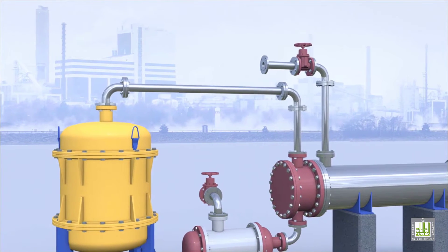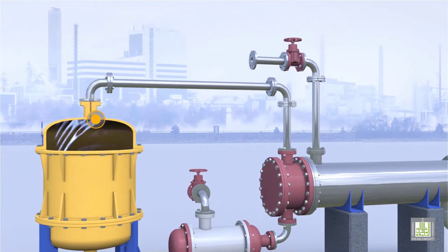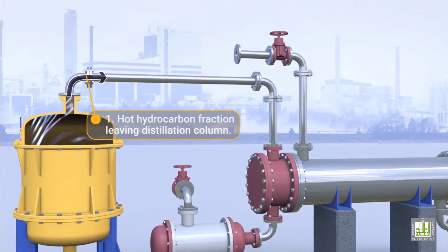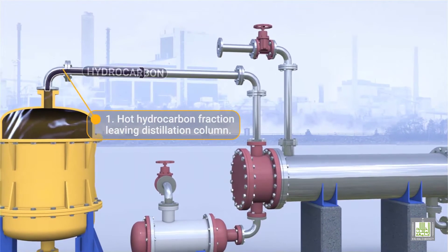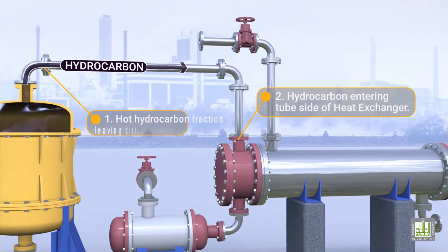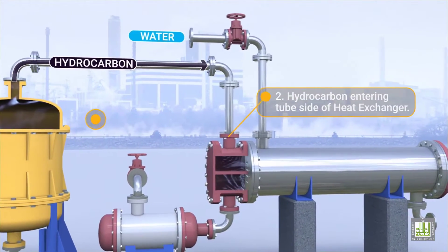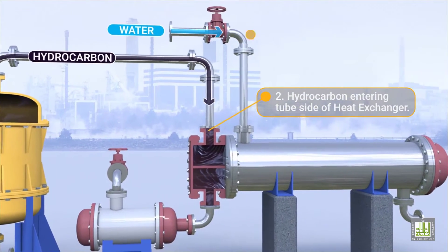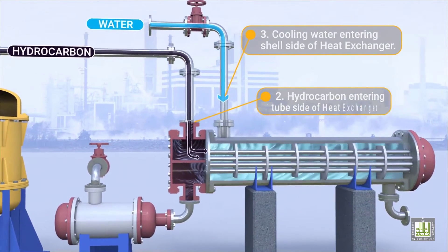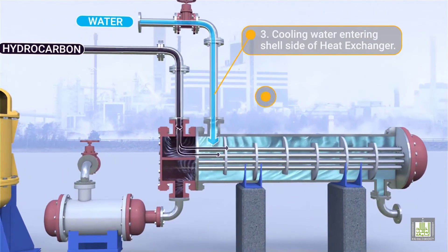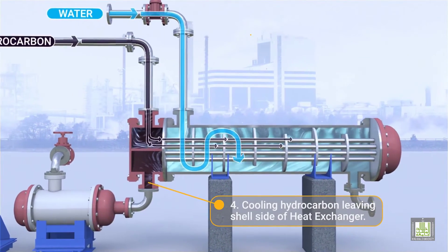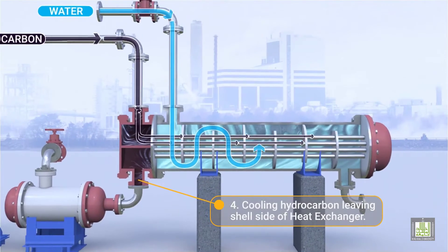Flow pattern: 1. Hot hydrocarbon fraction leaving the distillation column. 2. Hydrocarbon entering the tube side of the heat exchanger. 3. Cooling water entering the shell side of the heat exchanger. 4. Cooling water leaving the shell side of the heat exchanger.